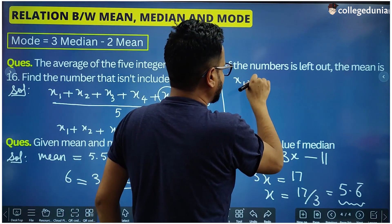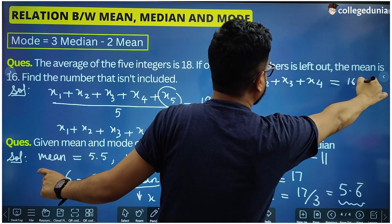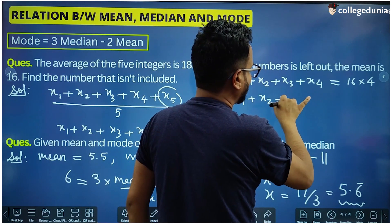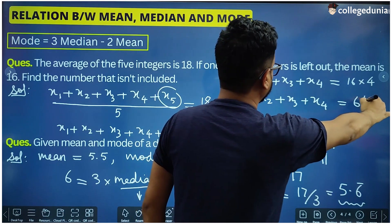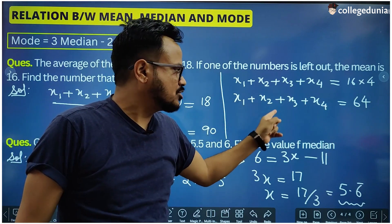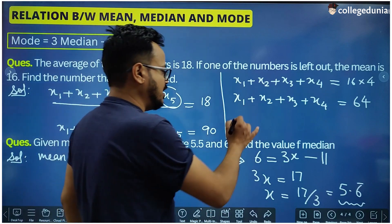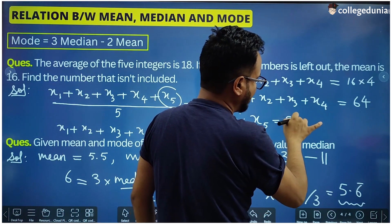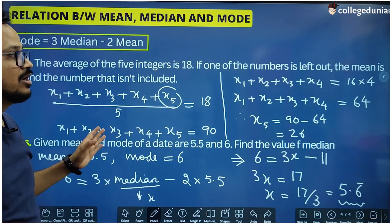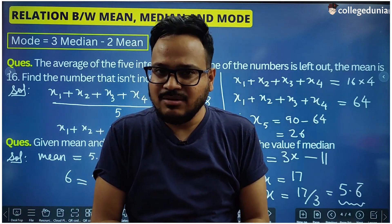So (x1 + x2 + x3 + x4) / 4 = 16, which means x1 + x2 + x3 + x4 = 64. The sum of all 5 numbers is 90. So x5 = 90 − 64 = 26. The number which was left out to get the new mean was 26. This was the meaning of mean, median, and mode — I will meet you in the next lecture.